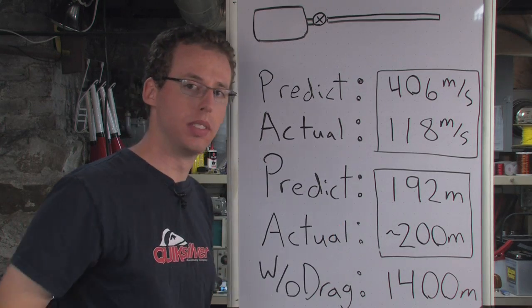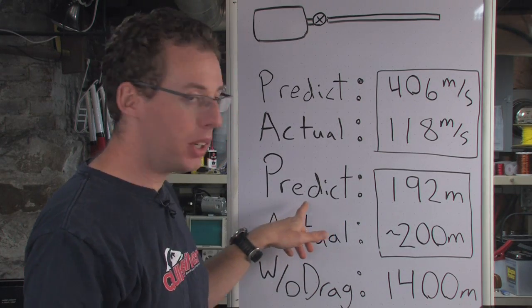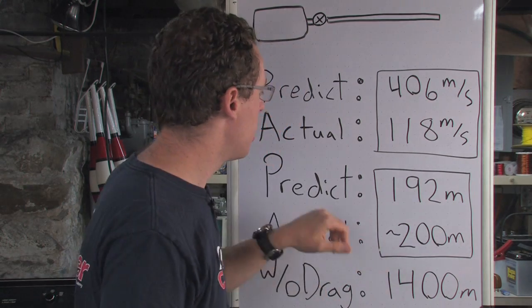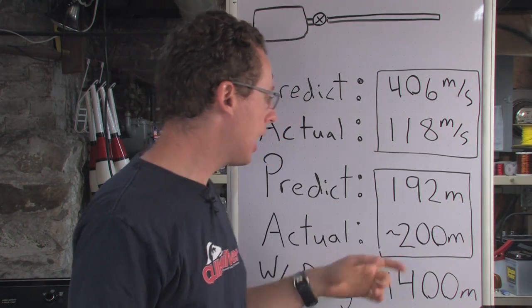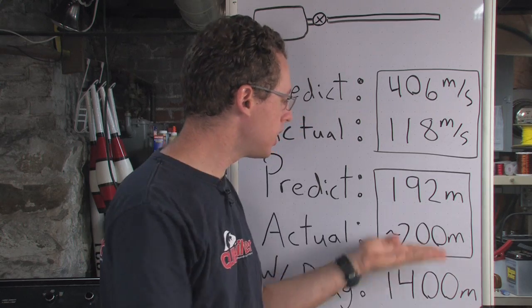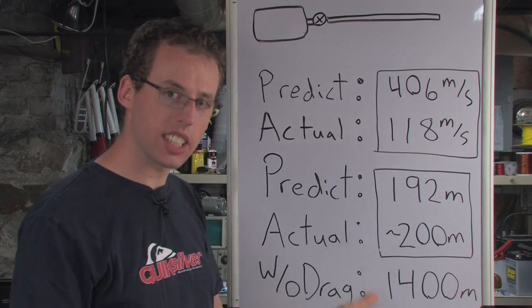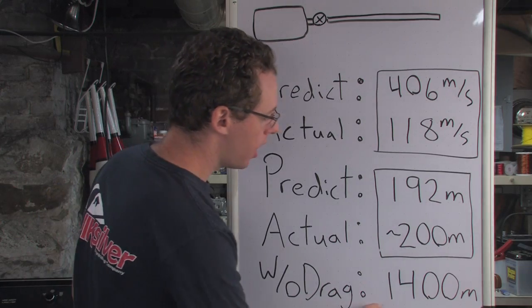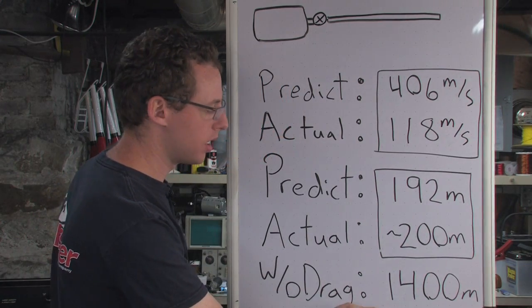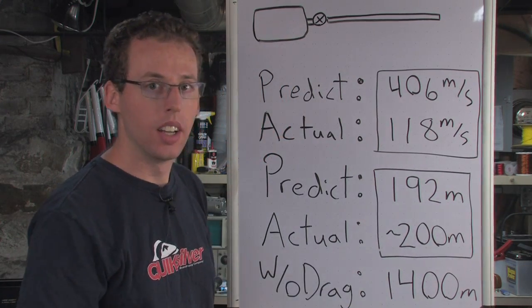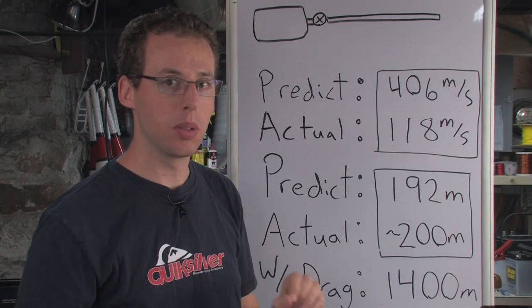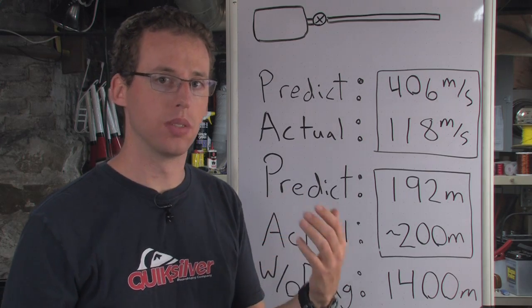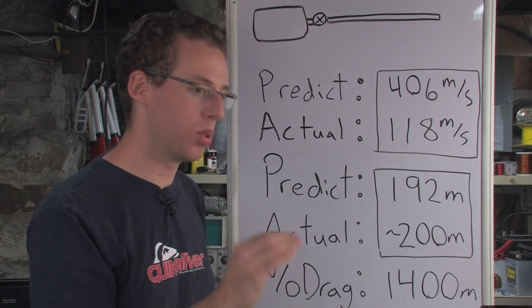So in terms of distance, how do we do? Our prediction with the little calculator, the iterative drag calculator, predicts 192 meters. In actuality, it went around 200, so that's really close. I'd say this is a success. And although the parabolic equation says that we should get around 1,400, that's seven times what we actually got. So in this case, drag was a really big factor. And that makes sense because of the really high speeds. The high speeds lead to high forces of drag because that goes as velocity squared again.